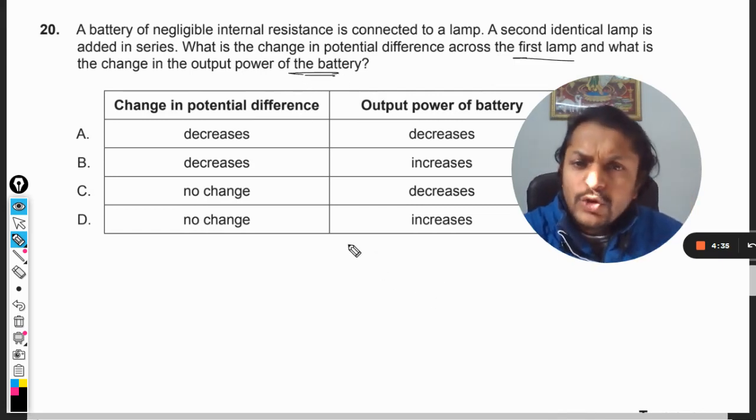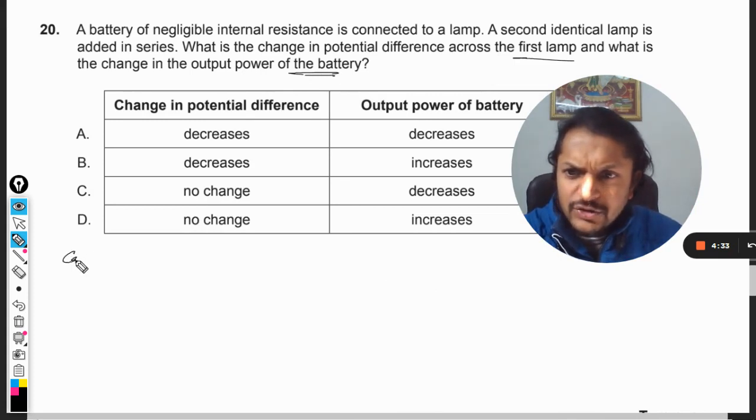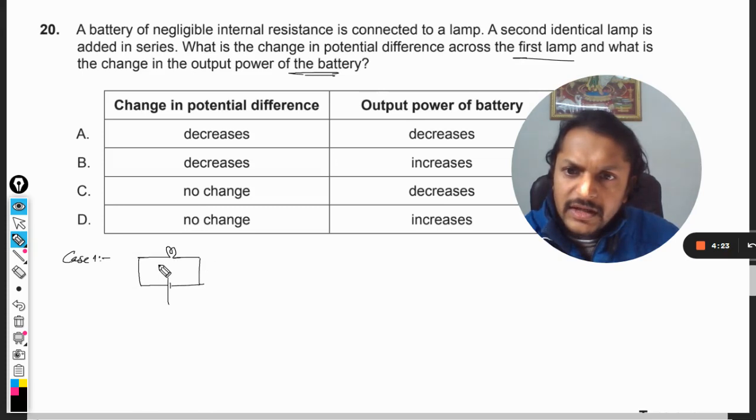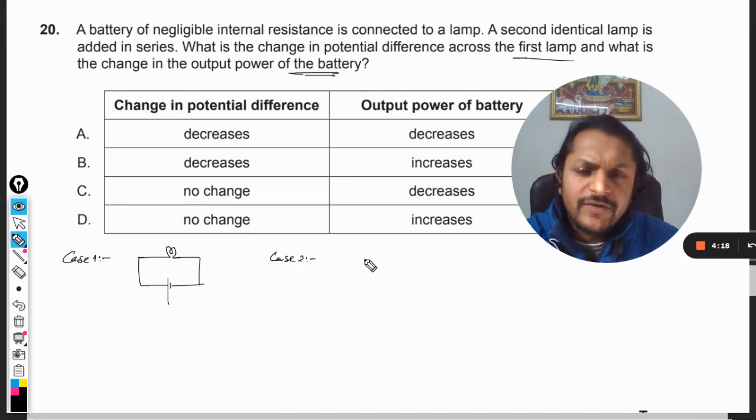So what is happening here? There are two cases being discussed. This is case number one - there is one lamp here and this battery. Case number two is when there are two lamps added here. By the way, this is the symbol of a lamp.